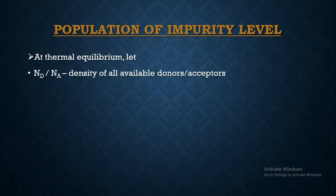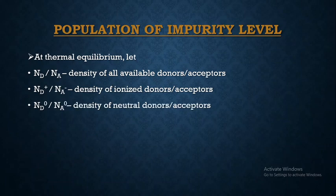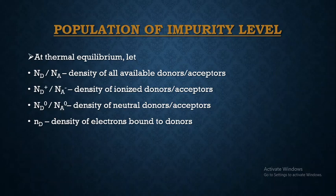Let N_d be the density of all available donors and N_a be the density of all available acceptors. When ionization takes place, N_d⁺ is the density of ionized donors whereas N_a⁻ is the density of ionized acceptors. Since all donors or acceptors may not be ionized, N_d⁰ represents the density of neutral or unionized donors, and N_a⁰ represents the density of neutral acceptors.